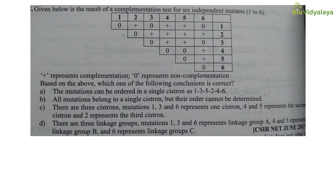Option A: The mutations can be ordered in a single system as 1, 3, 5, 2, 4, 6. Option B: All mutations belong to a single system but their order cannot be determined. Option C: There are three systems — mutations 1, 3, 6 represent one system; 4 and 5 represent the second system; and 2 represents the third system. Option D: There are three linkage groups — mutations 1, 3 and 6 represent linkage group A; 4 and 5 represent linkage group B; and 6 represents linkage group C.